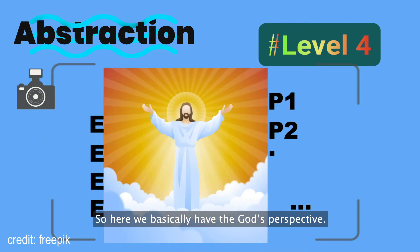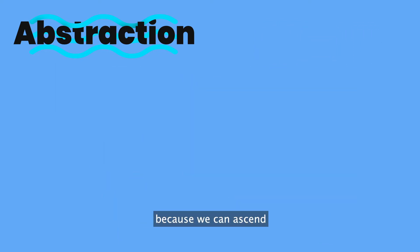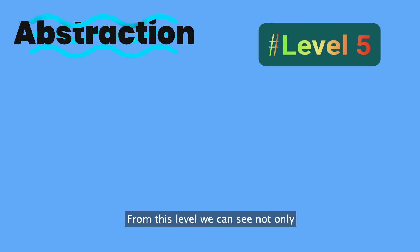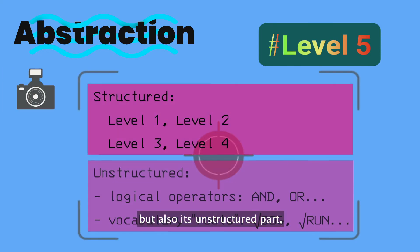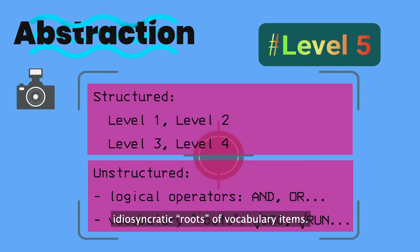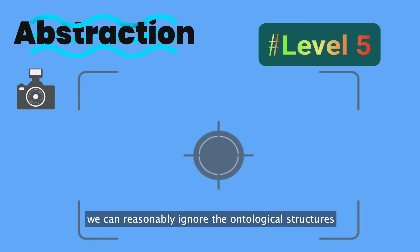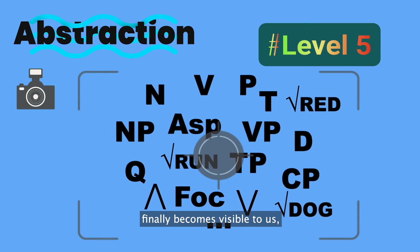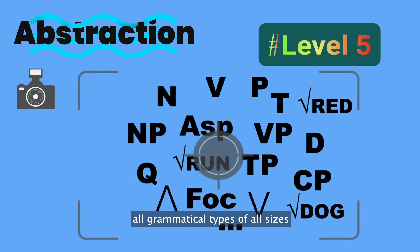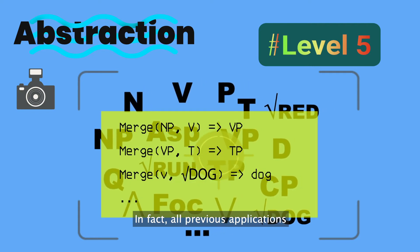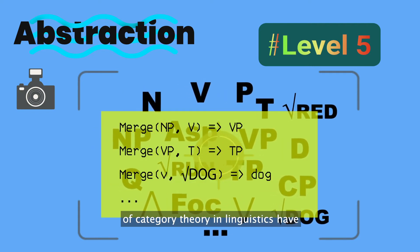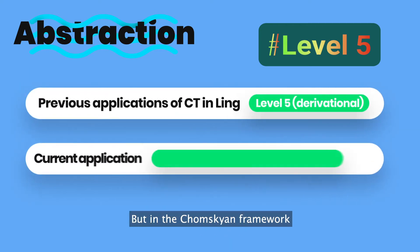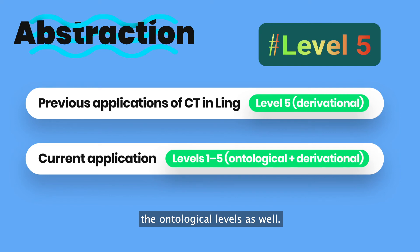At the fourth level we basically have the God's perspective. But that's not yet the end of our ladder of abstraction, because we can ascend higher onto a fifth level. From this level, we can see not only the structured part of human language but also its unstructured part, which accommodates grammatical types like the logical operators and the purely idiosyncratic roots of vocabulary items. At its highest level, we can reasonably ignore the ontological structures from the lower levels, while another kind of structure finally becomes visible — the structure that organizes all grammatical types of all sizes into a derivation system. In fact, all previous applications of category theory in linguistics have targeted this derivational level, but in the Chomskyan framework we can delve deeper into the ontological levels as well, and there are no intrinsic conflicts between the two approaches — they actually complement each other.